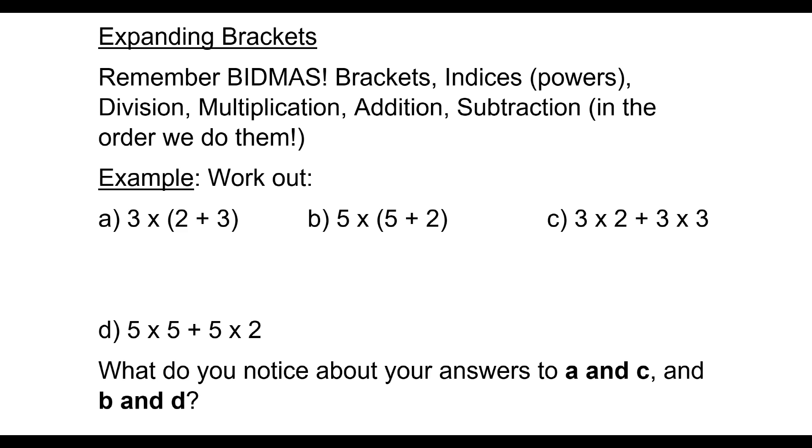In A, we want to work out 3 times bracket 2 plus 3. The first letter in BIDMAS stands for brackets, so I'm going to work out what's in the brackets first. 2 plus 3 is 5, and underneath that, I'm going to do the multiplication. 3 times 5 is 15, so my first answer is 15.